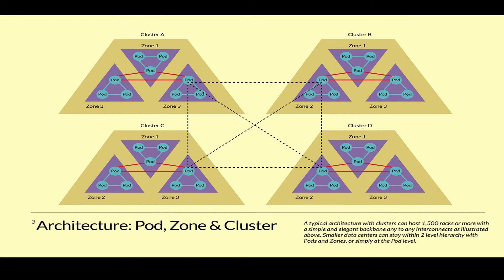Here is an example of a large data center that requires three levels of hierarchy: pod, zone, and cluster. A typical architecture with cluster can host 1,500 racks or more. Smaller data centers may only need one or two levels. The key is to define gateways in each level of the hierarchy and use the gateways for any outbound interconnections.